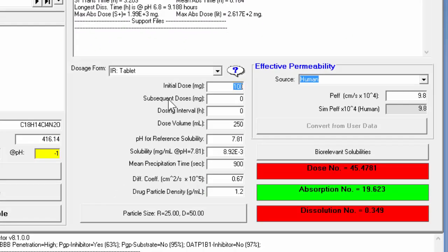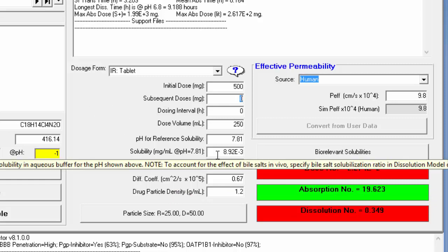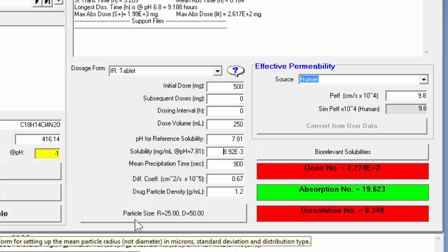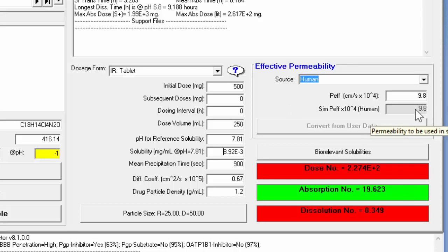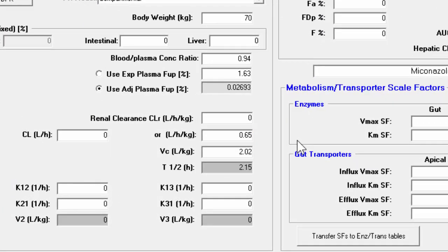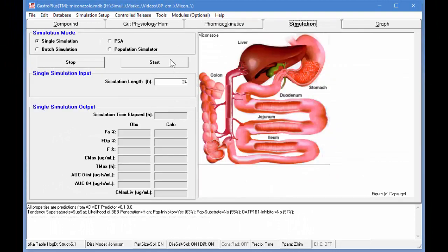I'm going to use a 500 milligram tablet so I'll specify 500 and you'll note that the dose number increased due to the increase in the number of milligrams. Here's the predicted solubility. It was 0.009 as I showed in the slides. In GastroPlus you get a few more decimal digits. The Peff is 9.8 which is fairly high and that gives it a green light for the absorption number. This would be a low solubility, high permeability or class II BCS compound. We'll go into the pharmacokinetics tab and I'm going to put the observed clearance of 0.65 liters per hour per kilogram and then we'll do a simulation.